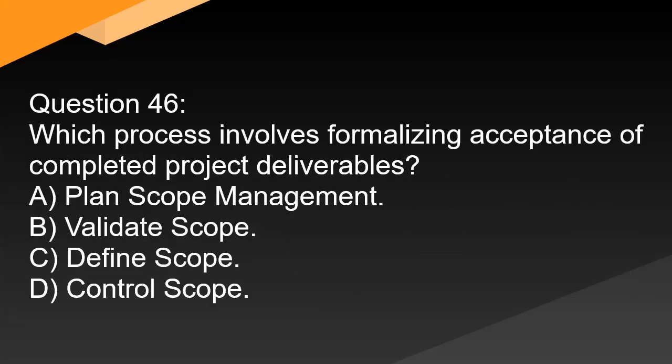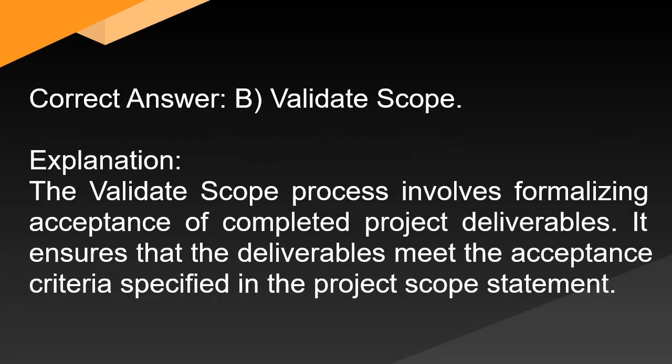Question 46: Which process involves formalizing acceptance of completed project deliverables? A. Plan scope management. B. Validate scope. C. Define scope. D. Control scope. Correct answer: B. Validate scope. Explanation: The validate scope process involves formalizing acceptance of completed project deliverables. It ensures that the deliverables meet the acceptance criteria specified in the project scope statement.